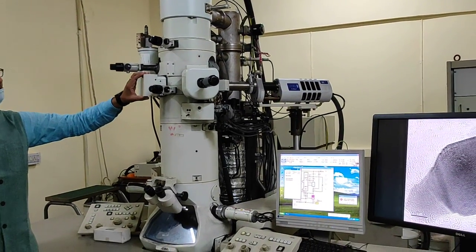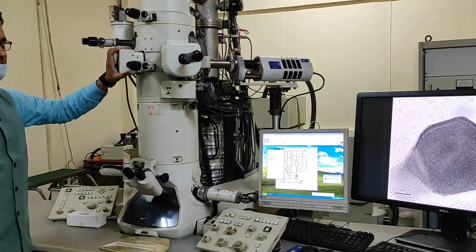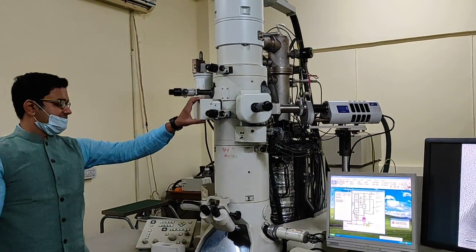by creating vacuum in the path of the beam with the help of pumps. This is the turbomolecular pump, ion getter pump, and roughing pump.